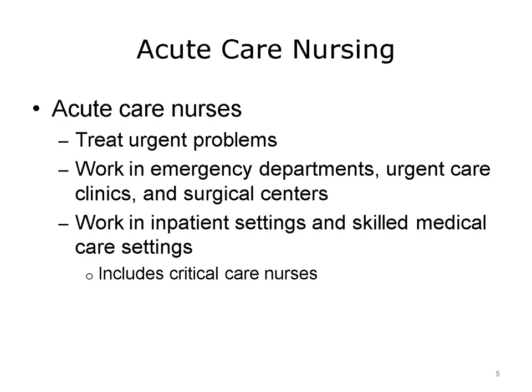Nurses provide a wide range of services to patients and their families in many different settings. This slide and the following slides describe where many nurses work and what they do there. Acute care nurses treat patients who need immediate treatment or monitoring. Depending on their qualifications, acute care nurses might screen, diagnose, or treat patients in an emergency department, an urgent care clinic, or at a surgical clinic. Acute care nurses manage a wide range of patient injuries and illnesses, both medical and surgical. These nurses may care for patients who are recovering from surgery or an invasive procedure at independent surgical centers and hospital surgical departments.